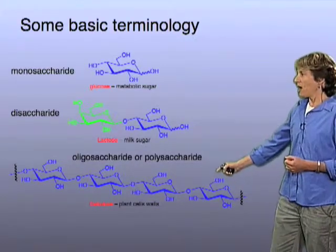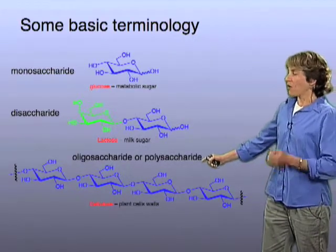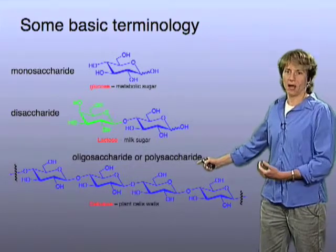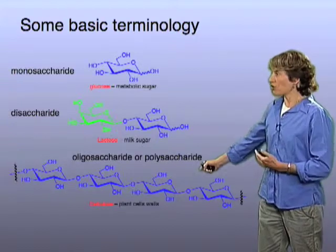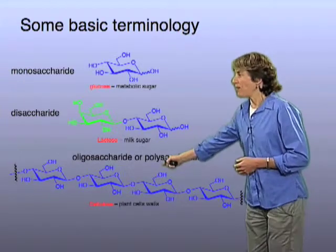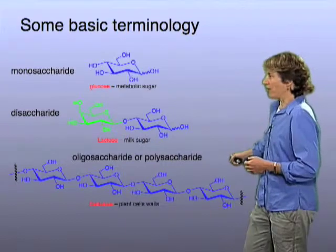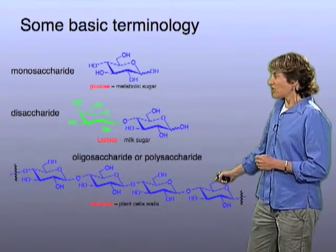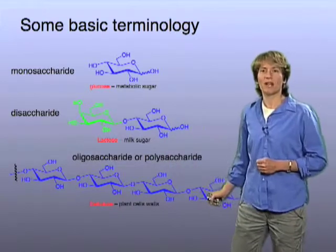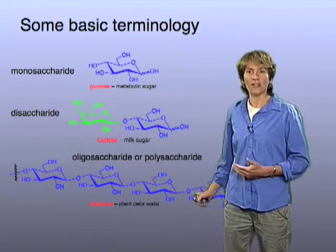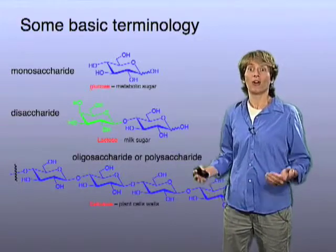Here's a structure of what we would call either an oligosaccharide or a polysaccharide — terms that we use interchangeably. This is a much larger structure with many copies of glucose all linked together in a long polymer. This structure is cellulose. It's the major component of plant cell walls, and in fact it's the most abundant organic material on Earth.